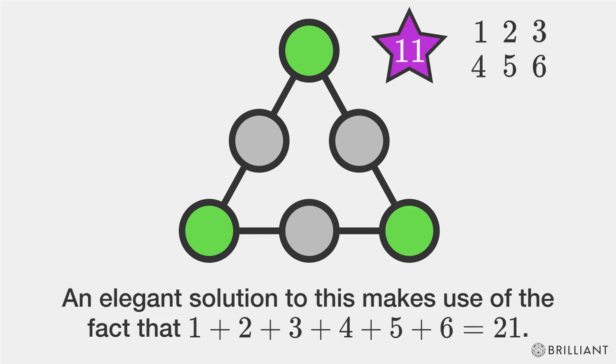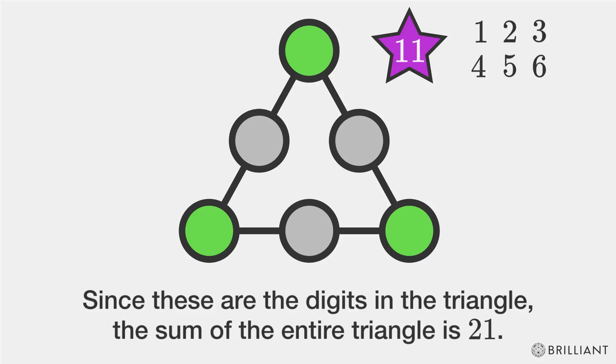An elegant solution to this makes use of the fact that 1 plus 2 plus 3 plus 4 plus 5 plus 6 is 21. Since these are the digits in the triangle, the sum of the entire triangle is 21.